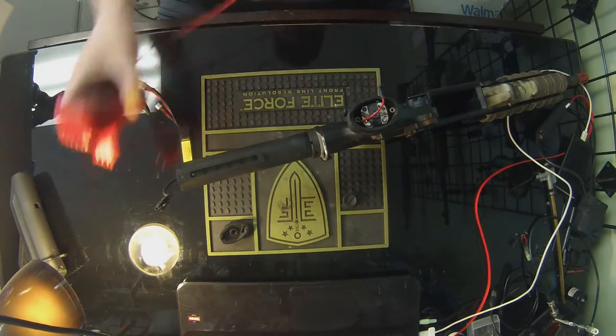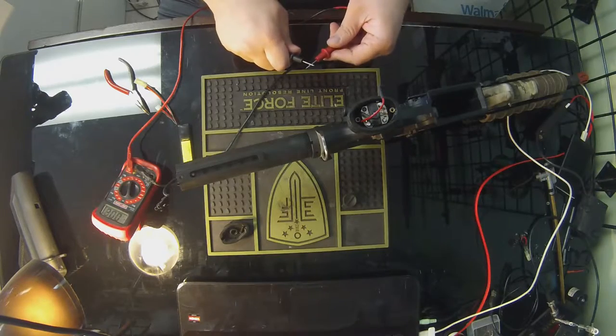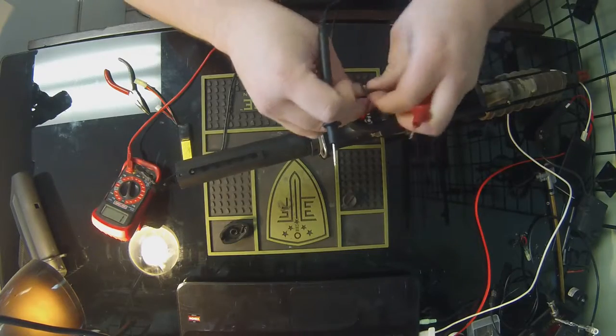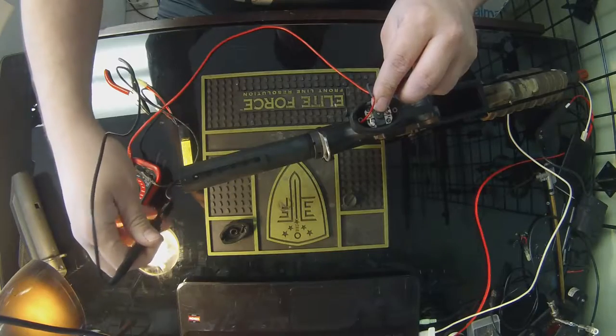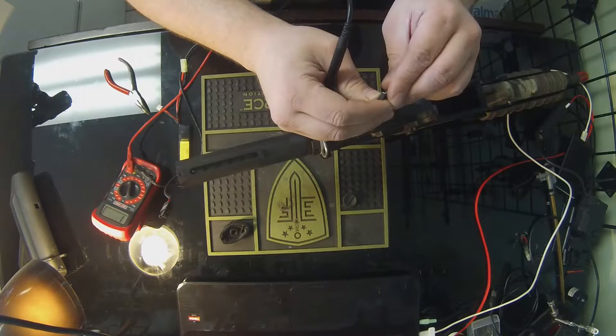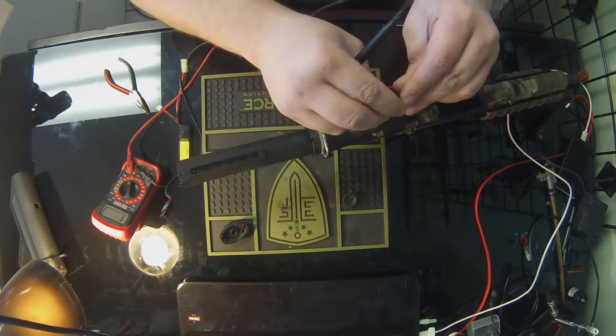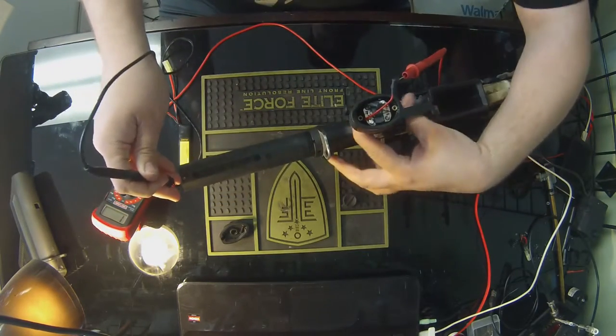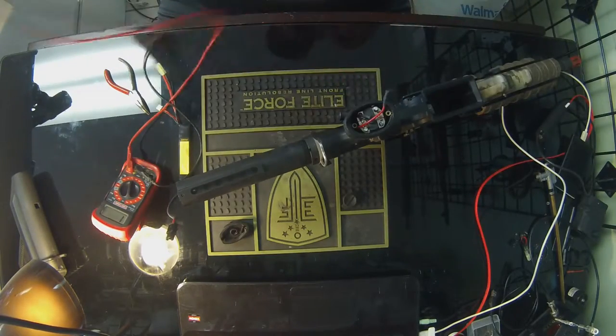When you touch two leads together and there's continuity flowing, the electric will flow through and it'll beep. So we have connection on the negative terminal. You can do this with the positive connection too. This is the way we check the trigger contacts. In order for this to work, you have to touch the connection and actually pull the trigger. Pulling the trigger, I'm not getting anything.